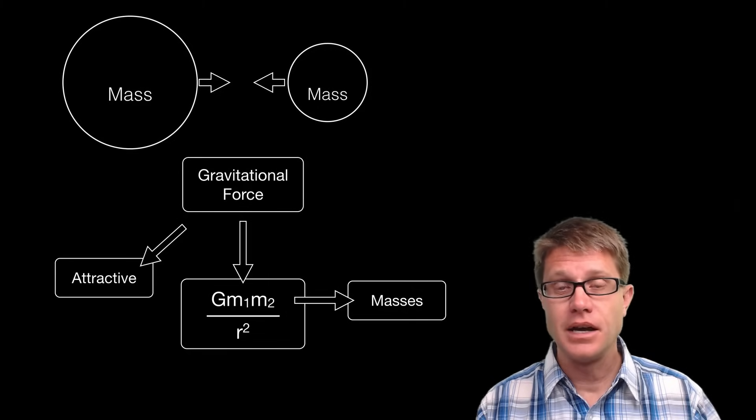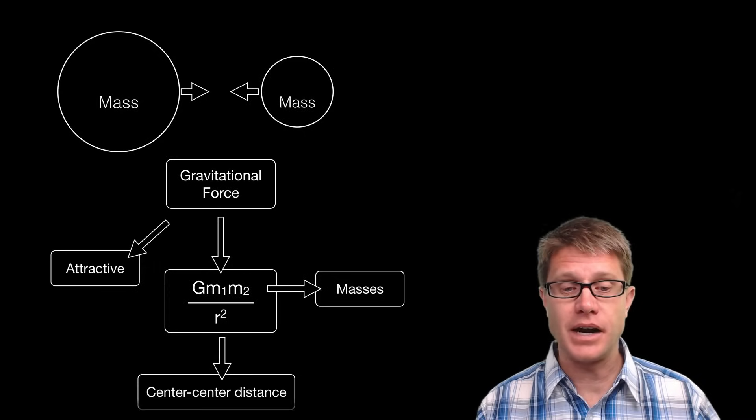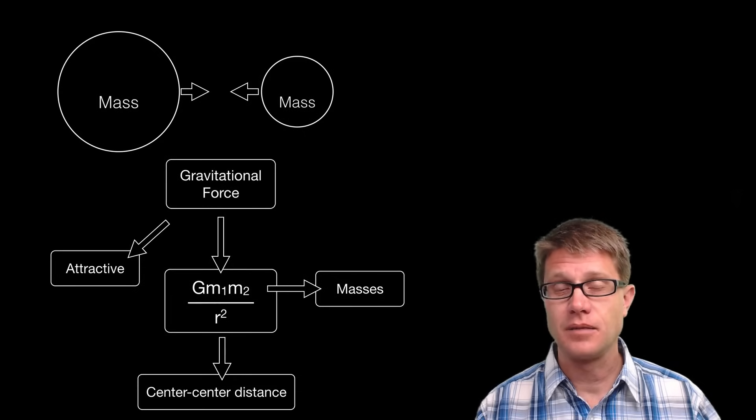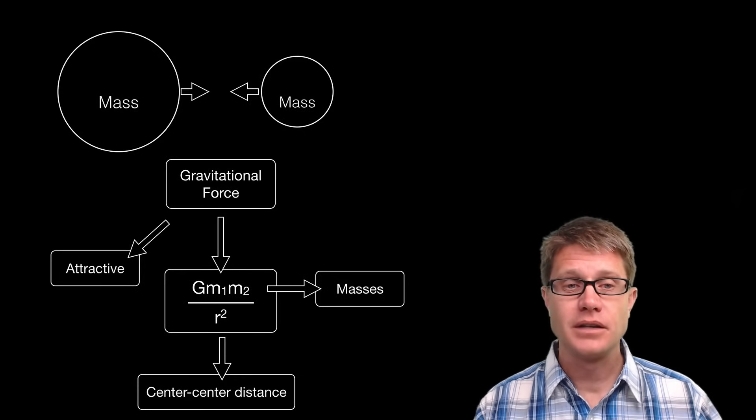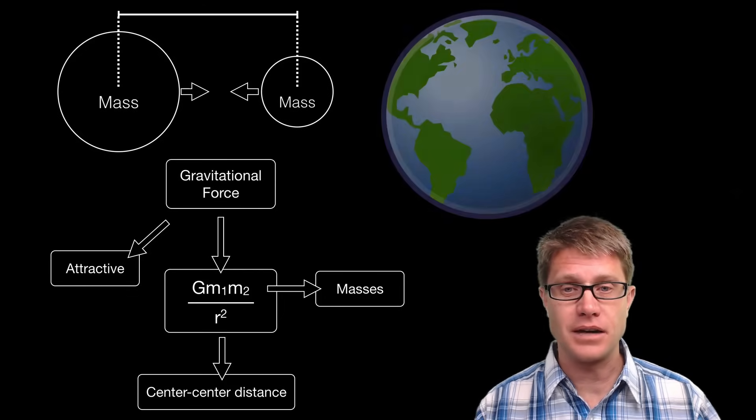So you simply calculate the force by multiplying the masses times this constant. And then you divide it by the center-center distance squared. Center-center distance is always going to go to the center of those two objects, or the center of mass.